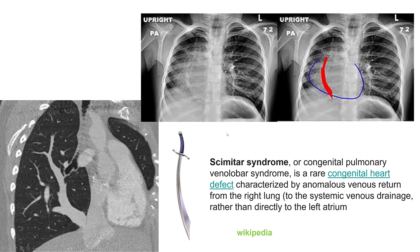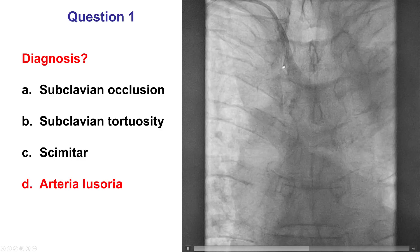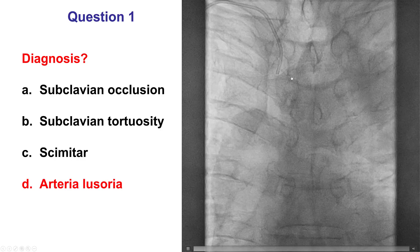Scimitar syndrome, option C, is actually a rare congenital pulmonary syndrome in which the pulmonary vein goes into the systemic vein — the inferior vena cava — and it appears on the chest X-ray like a scimitar, which is a curved sword. So clearly this has nothing to do with radial axis. What we're seeing here is a case of arteria lusoria.